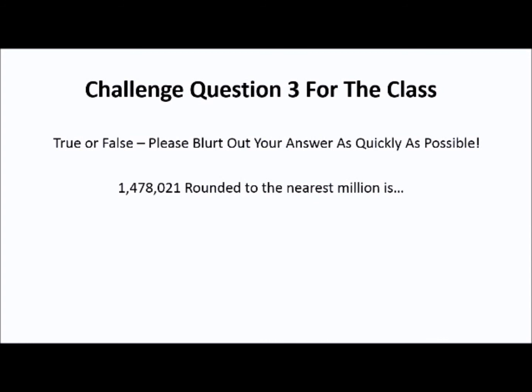1,478,021, rounded to the nearest million is 1,000,000. True or false? True. This would be true because, remember, 4 or less, you leave the millions place alone.